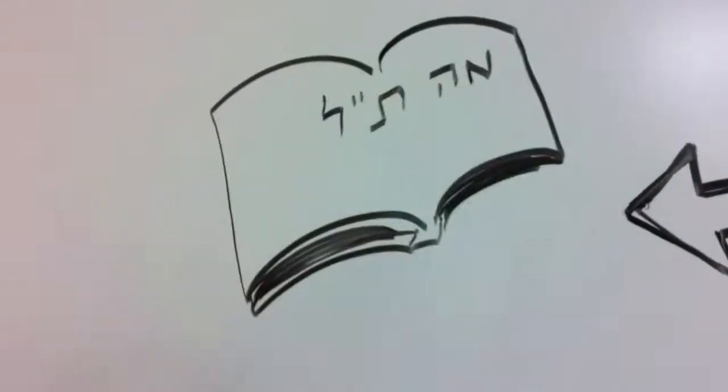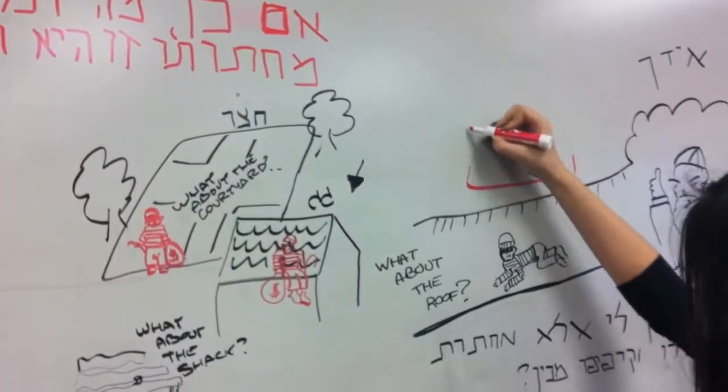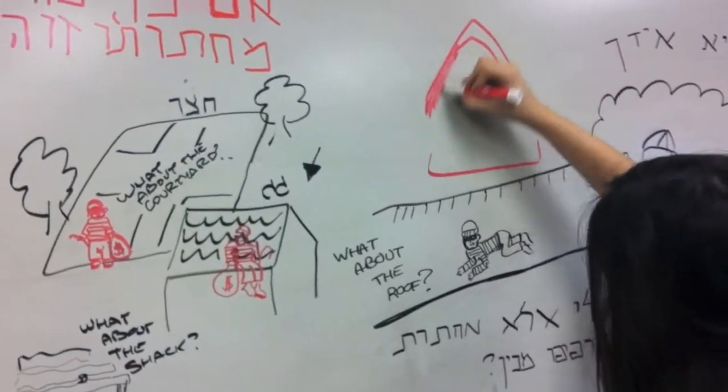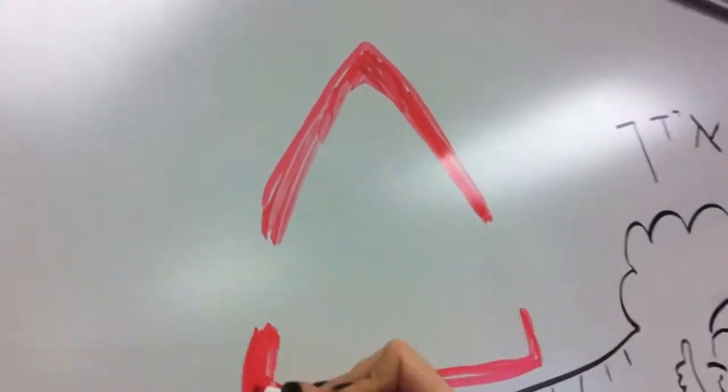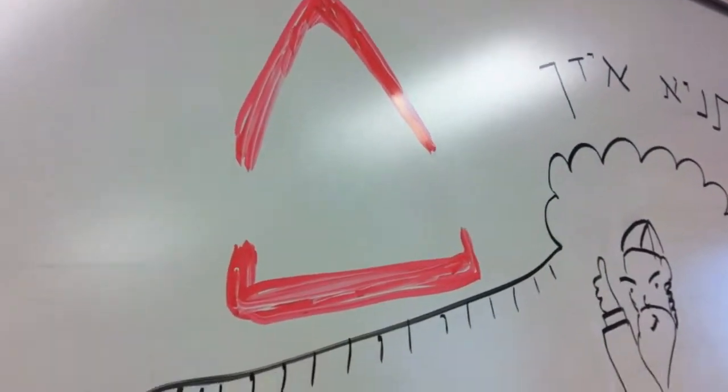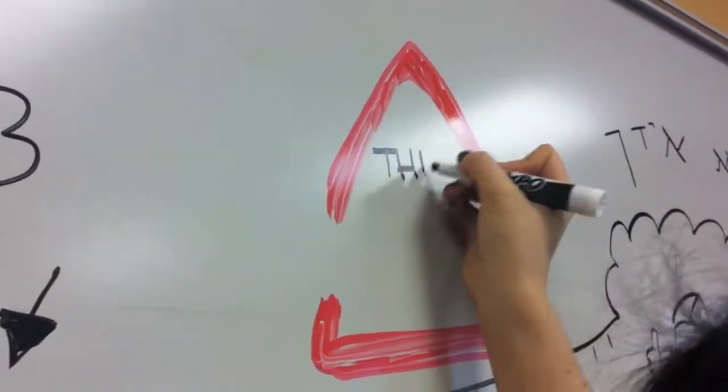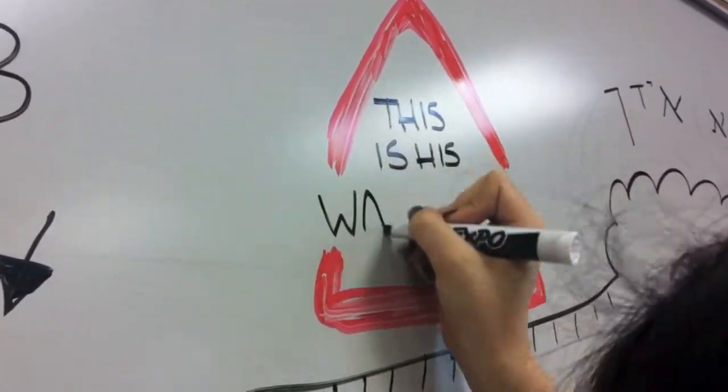If so, what does the Pasuk teach us? The tunnel is his warning. So if someone is tunneling in, that shows that he is coming to kill you. Because he is coming in a tunnel and we know he is coming to kill you, we don't need to warn him that we can kill him.